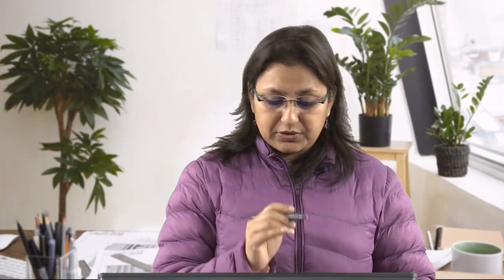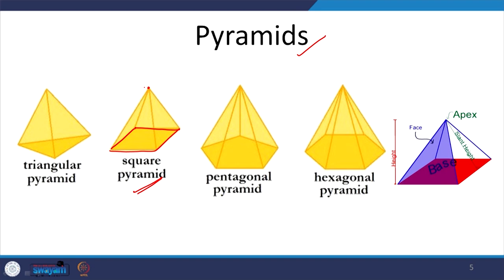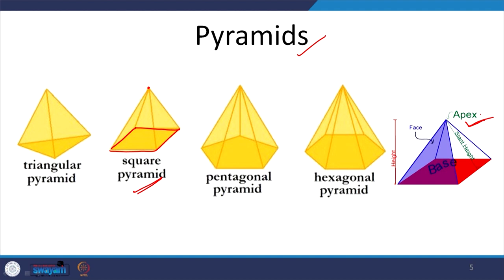The next set of solids commonly used is pyramids. If you remember the pyramids of Egypt, you have a certain idea of what a pyramid is, but a pyramid is not just a square base pyramid — Egyptian pyramids are all square pyramids. They have a square base and a top single point called the apex. Instead of faces remaining rectangular, if the faces become triangular and meet in one single point called the apex, the shape is called a pyramid.